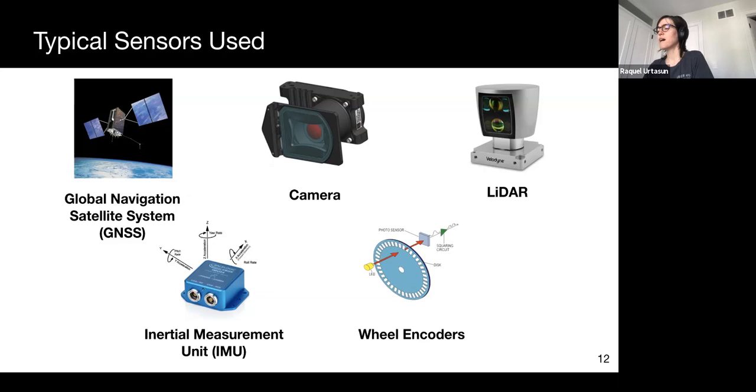IMUs and wheel encoders are also leveraged as additional cues, as they provide information that is complementary to the observations from cameras and lidars.